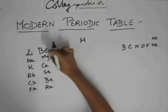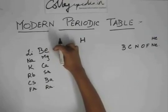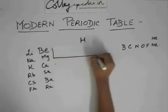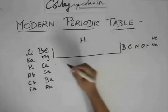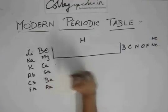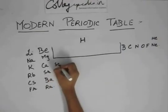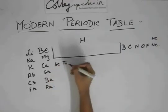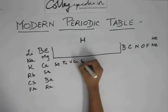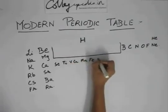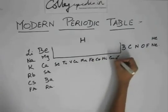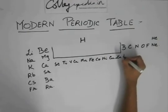And then after these two groups, we start directly from here. This space is empty. So after calcium, you don't need to remember all these, just for your information, just to fill the table. Scandium, titanium, vanadium, chromium, manganese, iron, cobalt, nickel, copper, zinc.